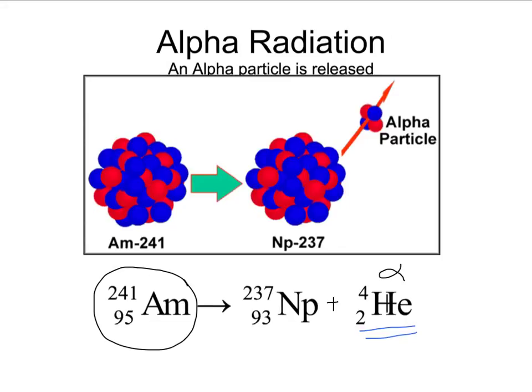In the process of americium losing the alpha particle, we end up with neptunium. The way we would figure this out is we would take our atomic number of 95. We know that the alpha particle has an atomic number of 2, so we would take our 95 minus 2 to give us 93. The 93 is the atomic number of neptunium. That tells us what type of atom we have.